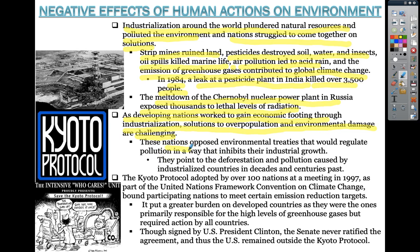Developing nations oppose environmental treaties that would regulate pollution because it inhibits their industrial growth. They point to the deforestation and pollution caused by industrial countries in decades and centuries past, seeing an unfair disadvantage. The Kyoto Protocol was adopted by over 100 nations at a meeting in 1997 as part of the United Nations Framework Convention on Climate Change, binding participating nations to meet certain emission reduction targets.